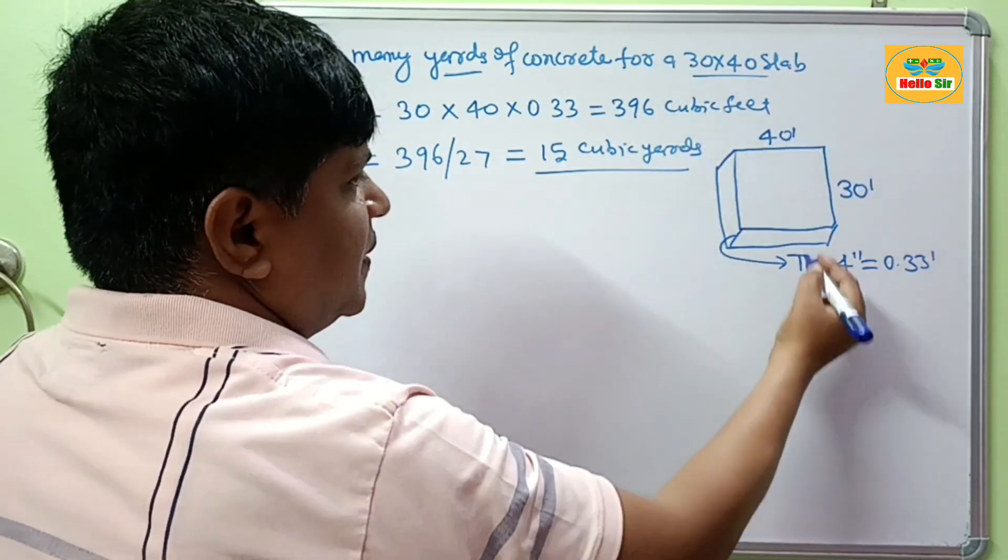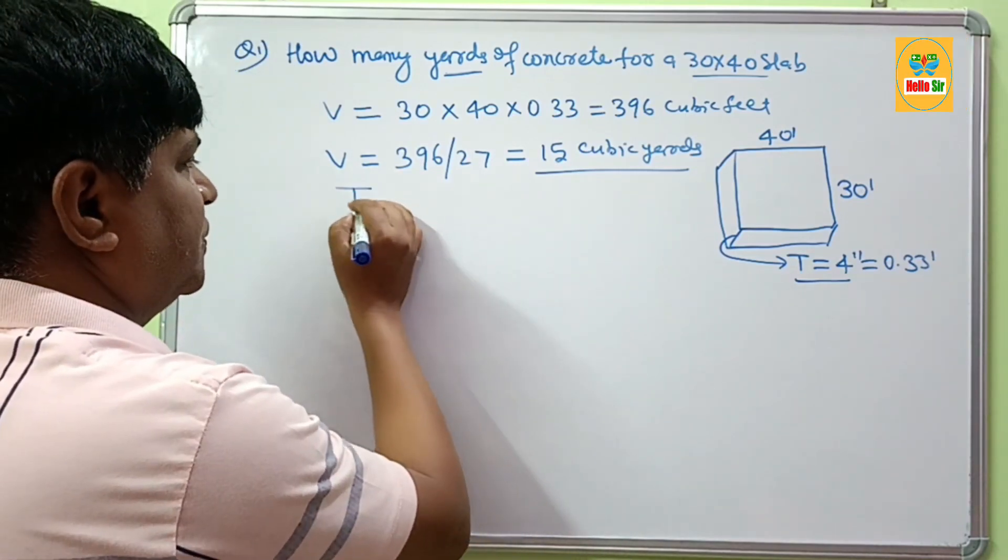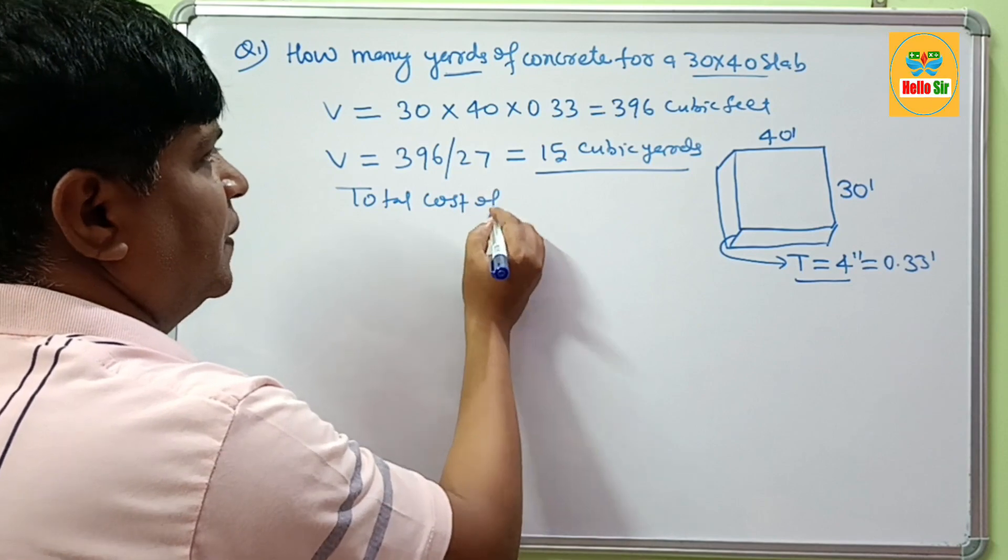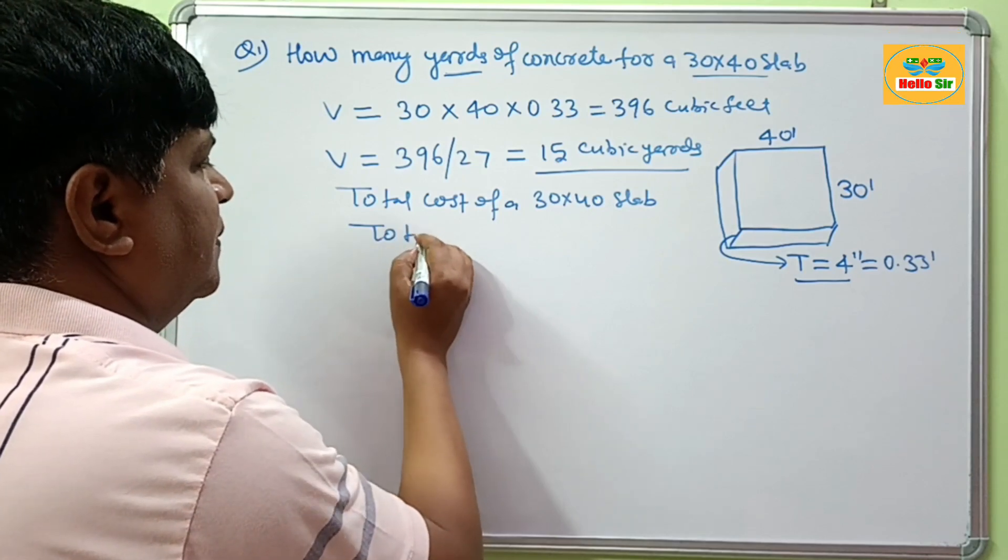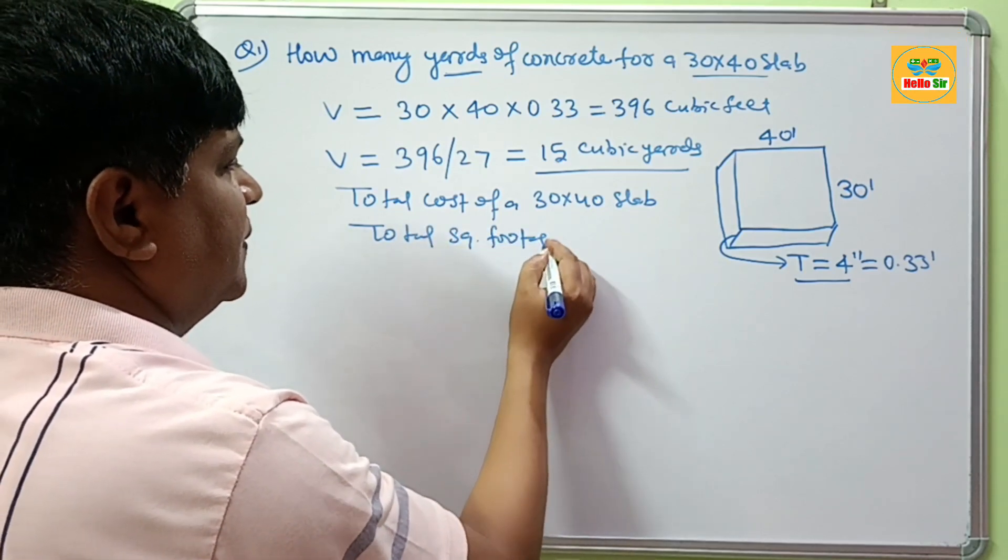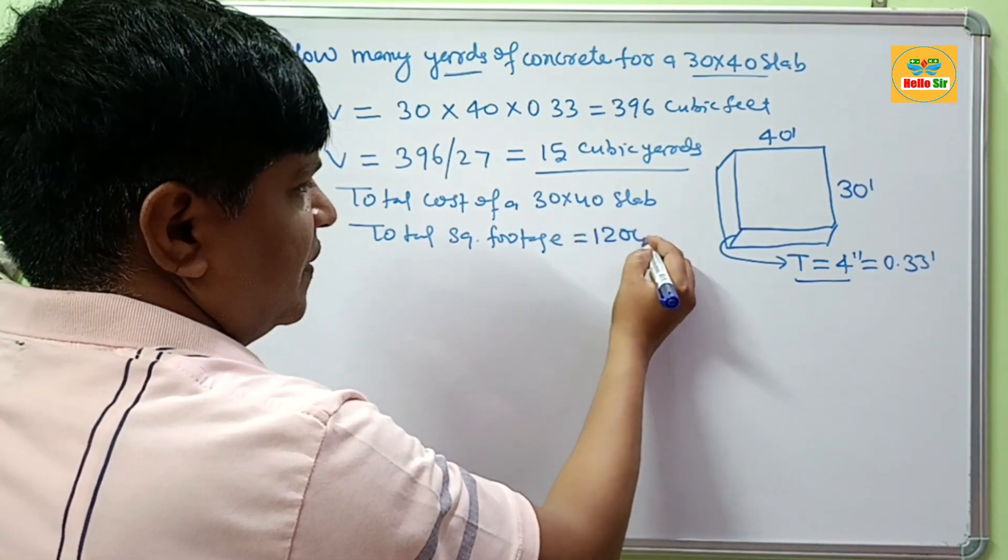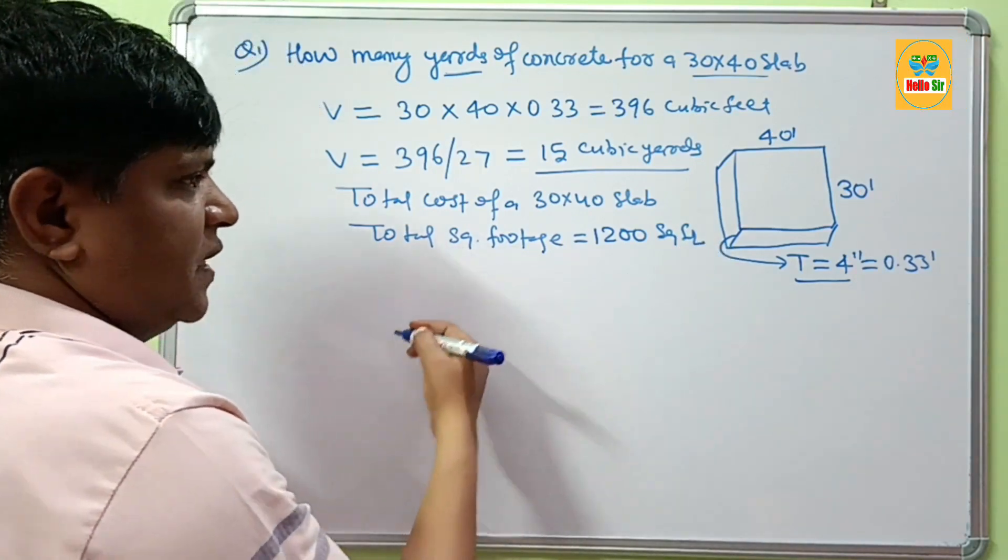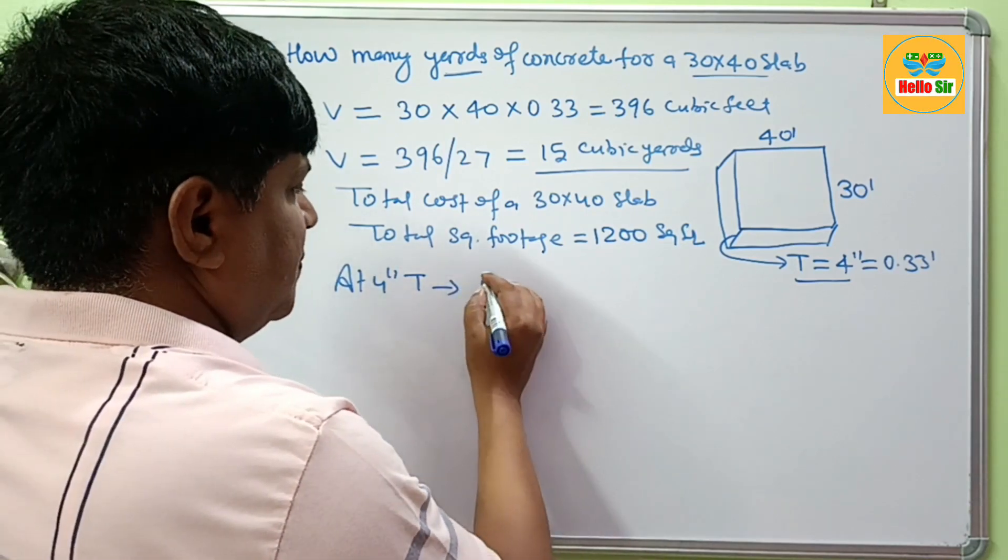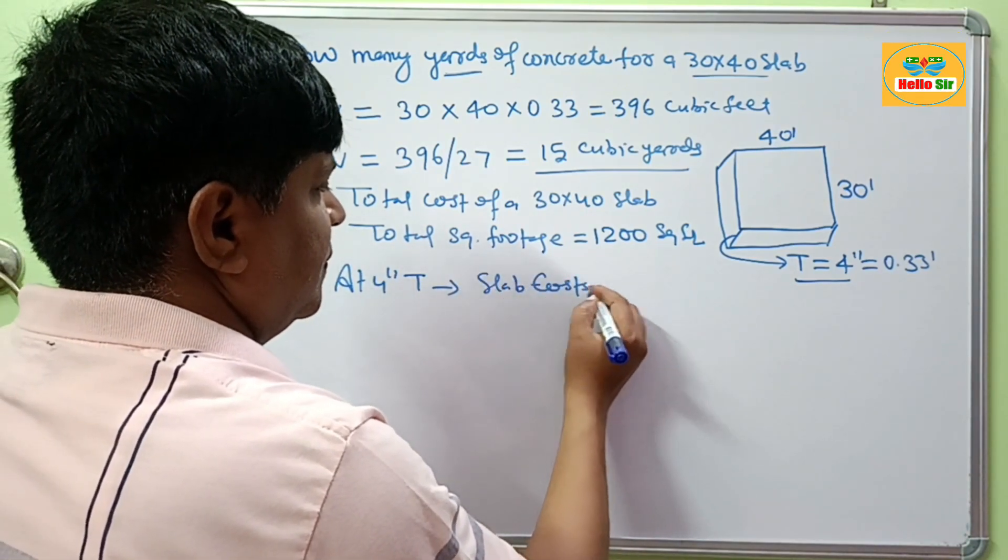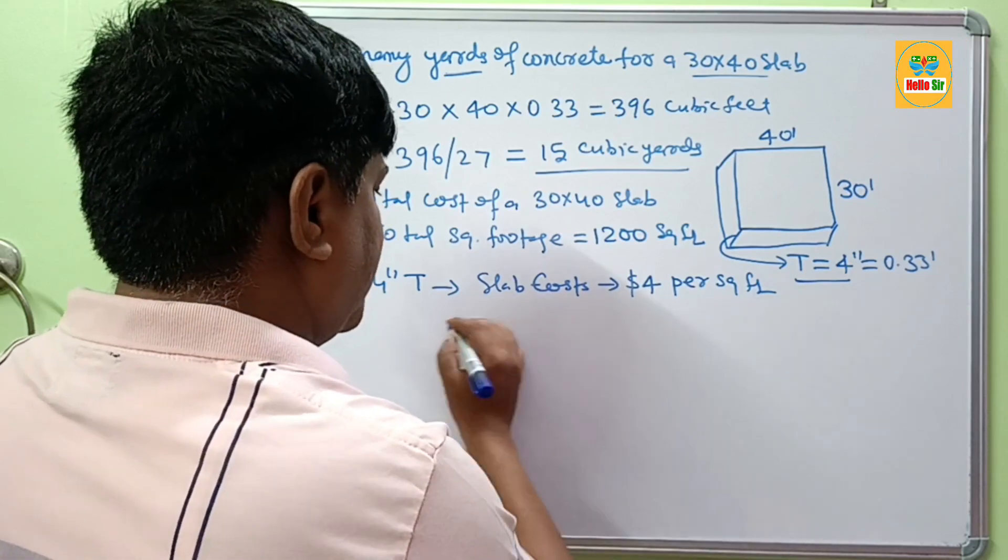It means you need approximately 15 cubic yards of concrete for a 30 by 40 slab at 4 inch thickness. If you want to know the total cost, the total square footage of this slab is 1200 square feet. At 4 inches thickness, concrete slab costs about $4 per square foot.